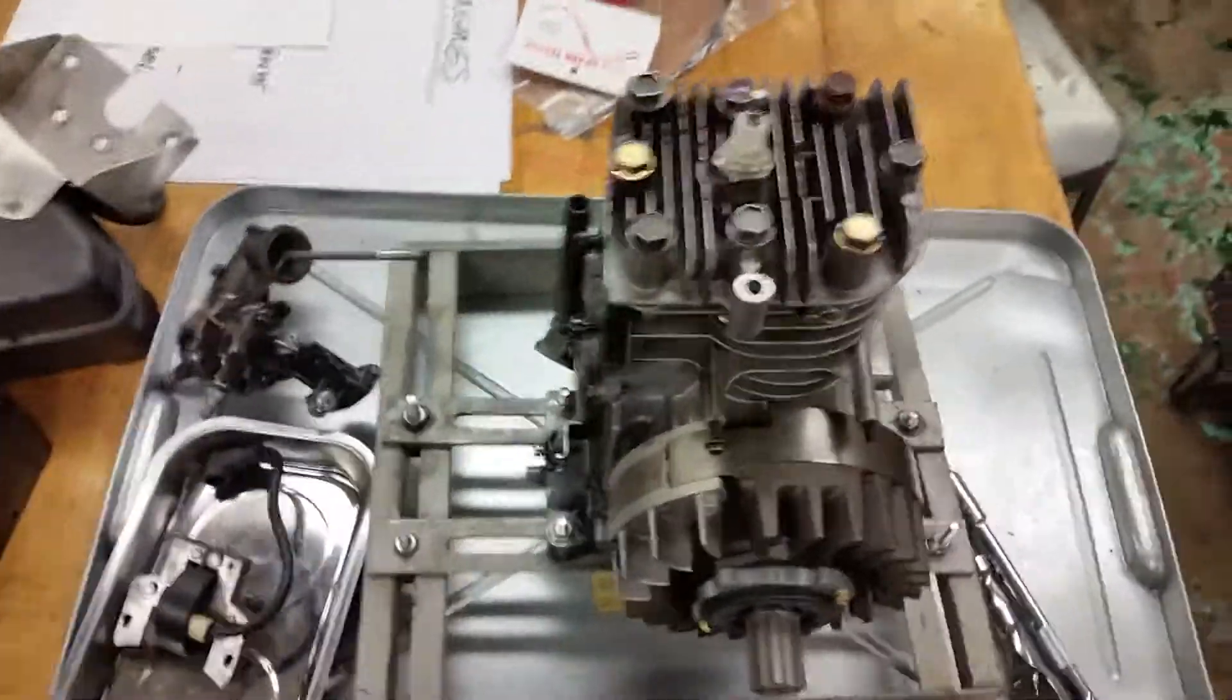And small engines are a great way to learn about how engines work, because the only difference between a small engine and, let's say, like a Ferrari is two things: the spaces in between and the materials. So otherwise, fundamentally, it's the same four stroke process.